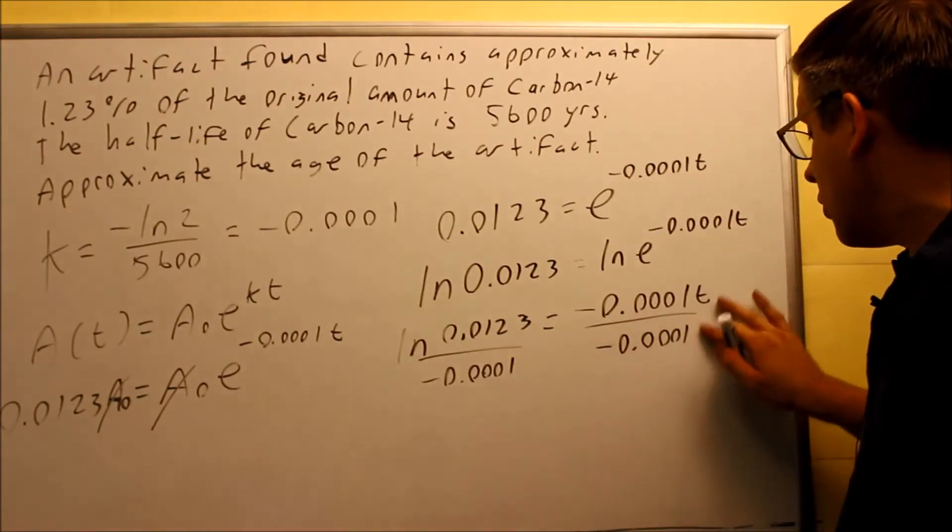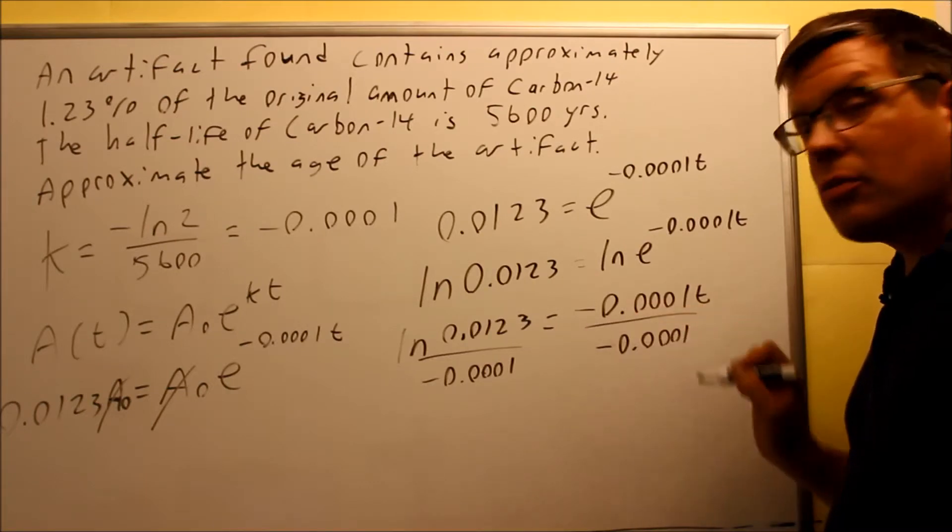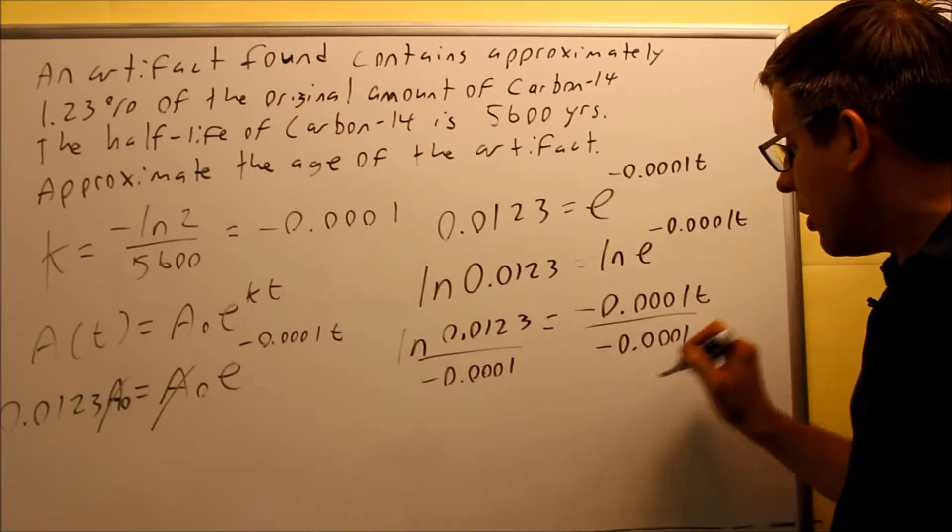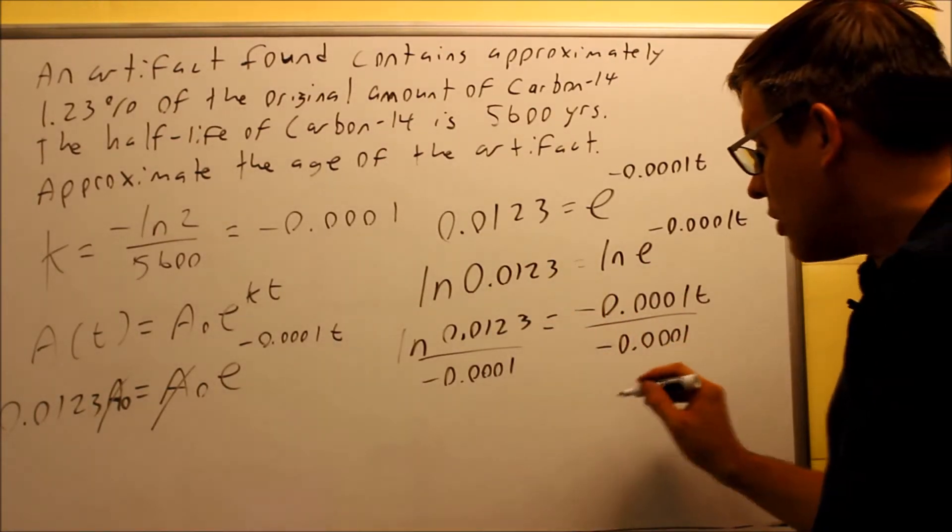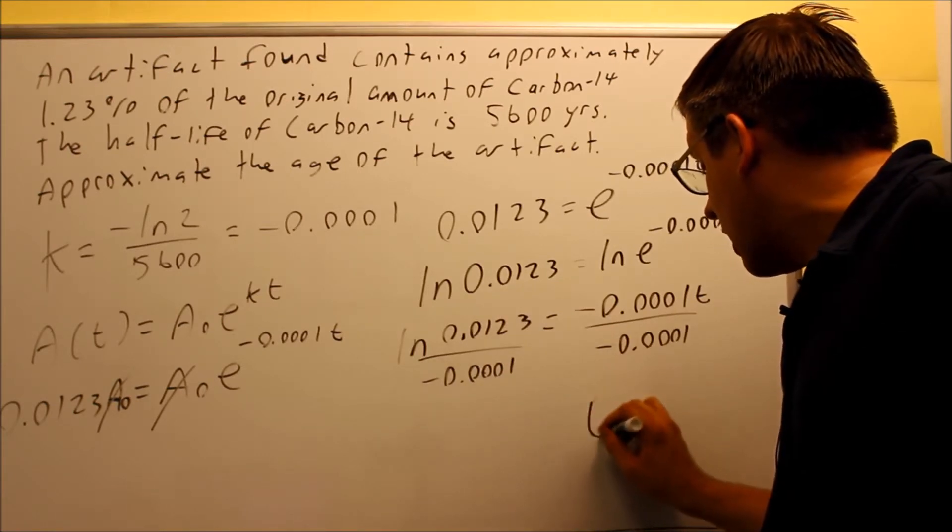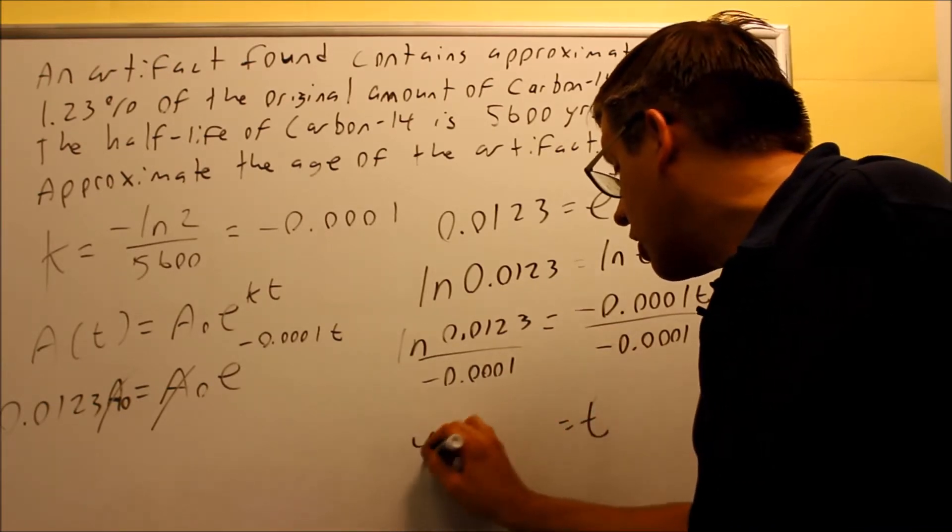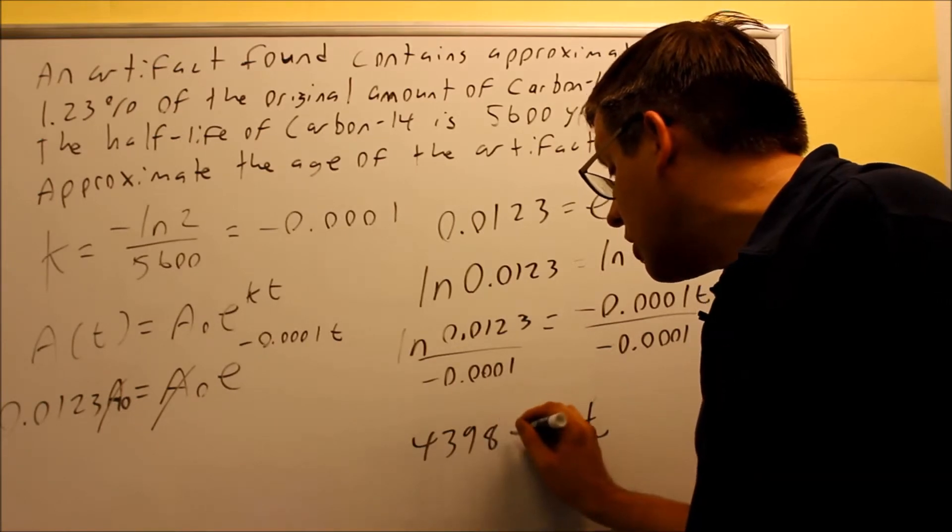So you divide both sides, actually don't need the t here, just divide both sides by the number only. So if you divide this by the number and divide that by the number, what will happen is you'll get an approximation for time. And when you do, you're going to get about 43,982 years.